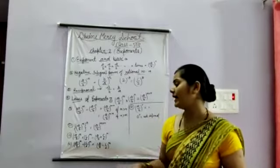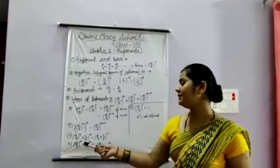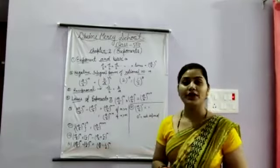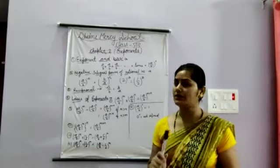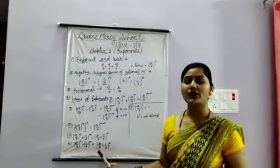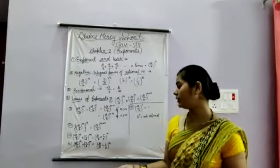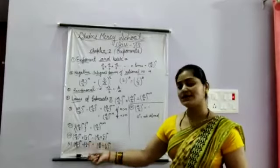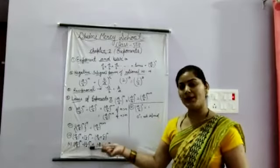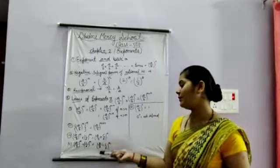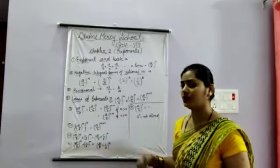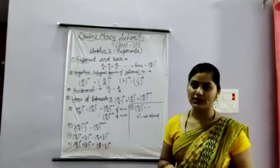The fifth law: if A upon B to the power M is divided by C upon D to the power M — the bases are different but the powers are the same — we divide the bases and write the power once. The result is A upon B divided by C upon D, all to the power M.